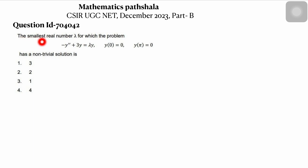The smallest real number lambda for which the problem has a non-trivial solution is what we need to find. Basically, we have to find the smallest value of lambda for which the given problem will give a non-trivial solution. The given problem can be written as y'' + (lambda minus 3) times y = 0.